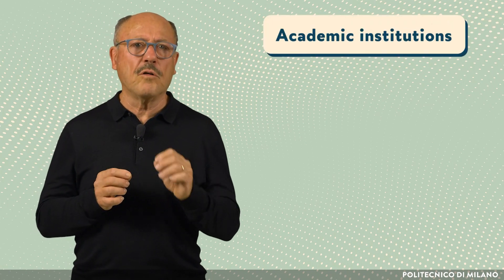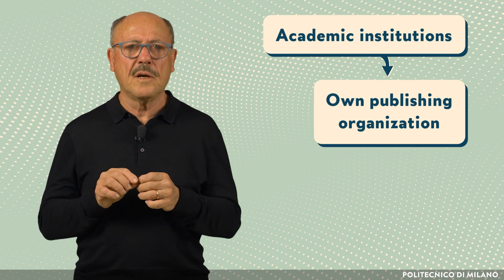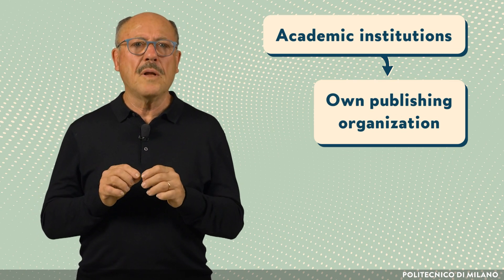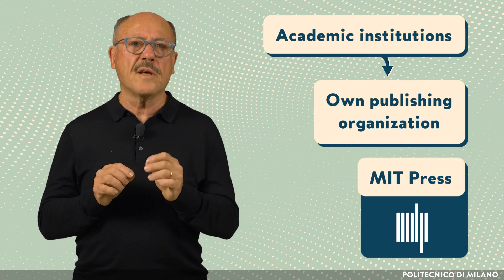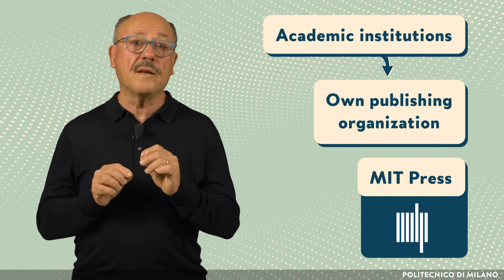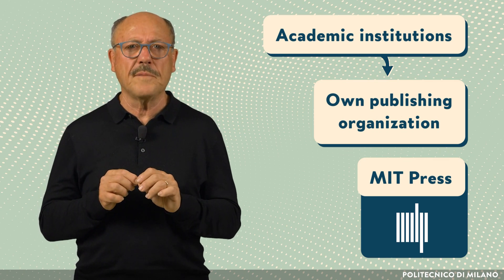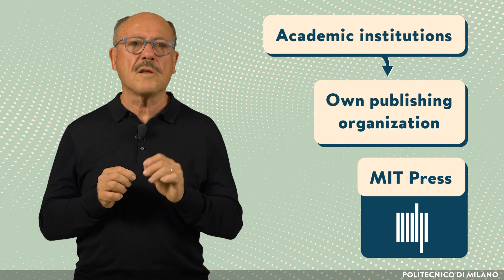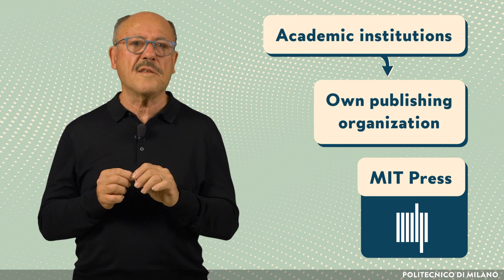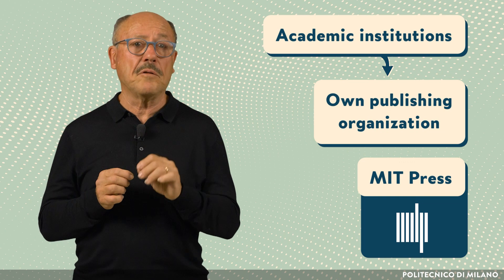Finally, some academic institutions also have their own publishing organizations. For example, the MIT Press is a university press affiliated with Massachusetts Institute of Technology. It is a publisher of books and journals whose editorial board consists of MIT faculty members.